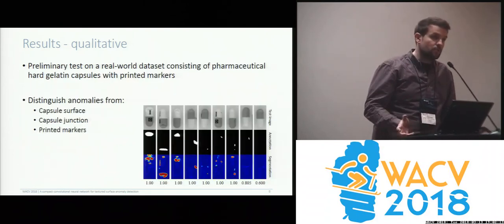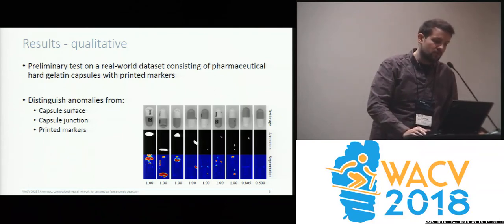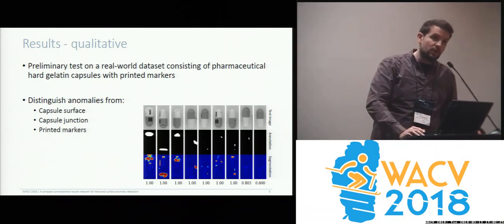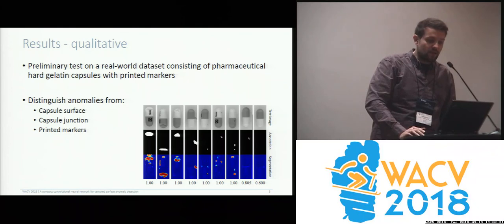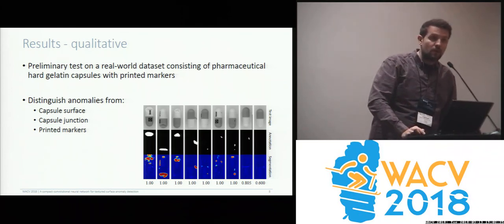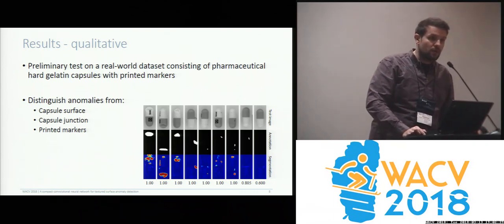Now, if we apply this to a real-world problem, this is an example using images from pharmaceutical hard gelatin capsules captured by specialized machines. We would like to distinguish any type of anomaly from capsule surfaces, capsule joints, and printed markers. With this small and compact approach, we are able to do so without making any changes to the architecture.